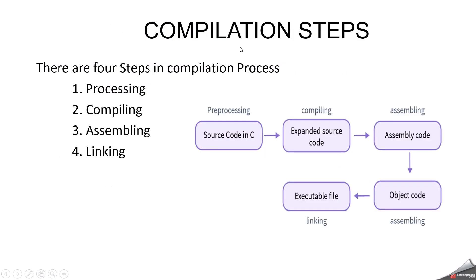Now we can see the compilation steps. Basically, there are four steps involved in the compilation process. The first one is preprocessing, the next one is compiling, another one is assembling, and the final one is linking.